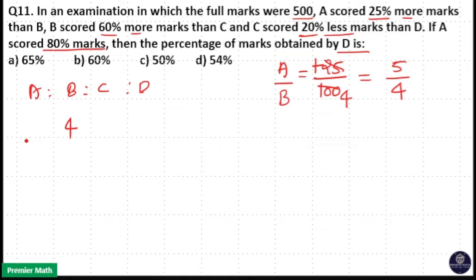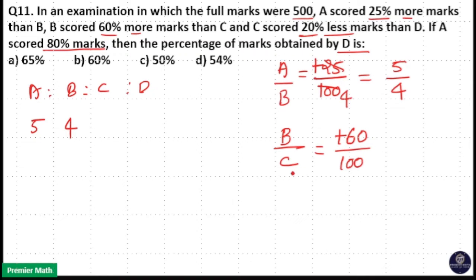So if B scores 4 marks, A will score 5 marks. Same way, B scored 60% more marks than C — that is the B by C ratio. B scored 60% more, that is plus 60, and 60% is 60 by 100. If C scored 100, B will score 100 plus 60, which is 160 marks. Cancelling by 20 gives 8 by 5. So if C scores 5 marks, B will score 5 plus 3, which is 8 marks. That is 8 by 5 is the B by C ratio.